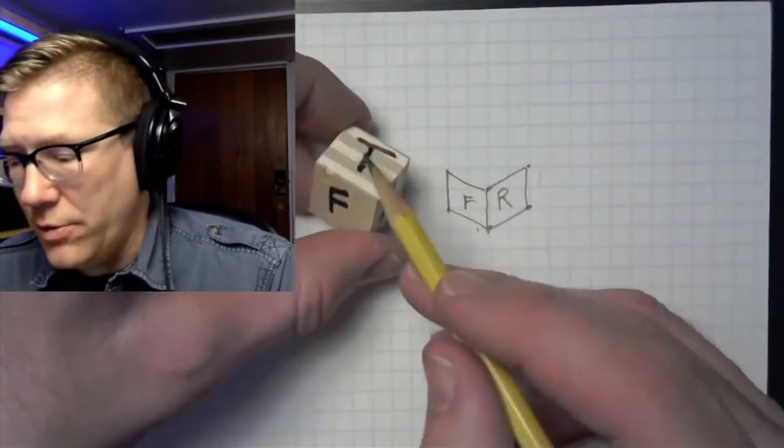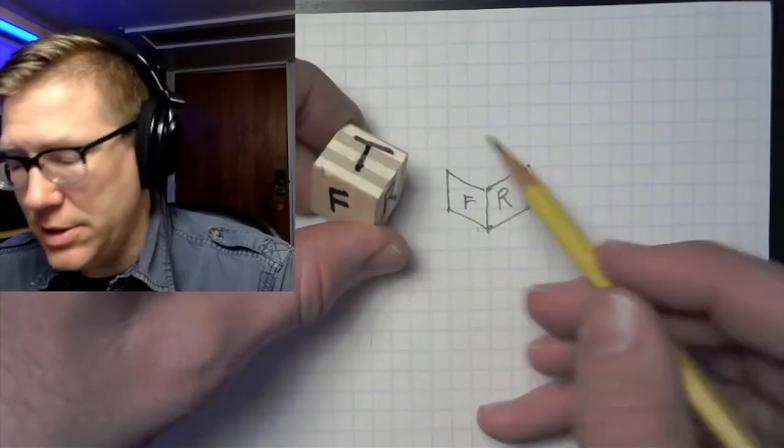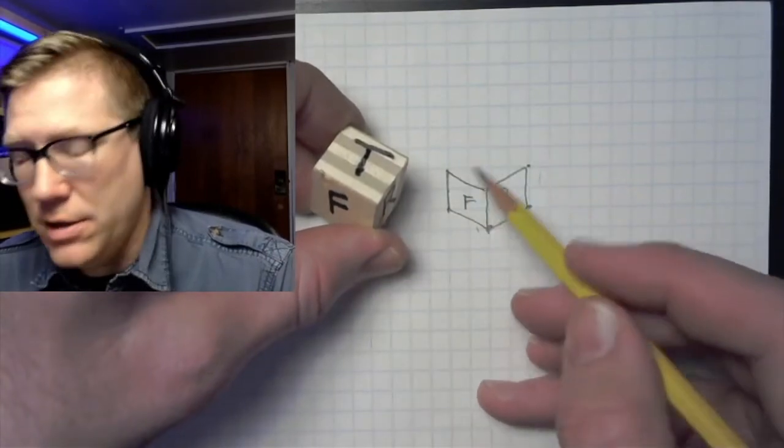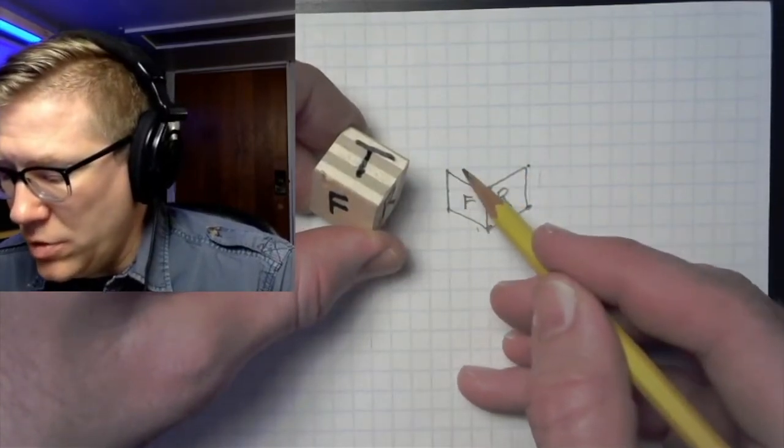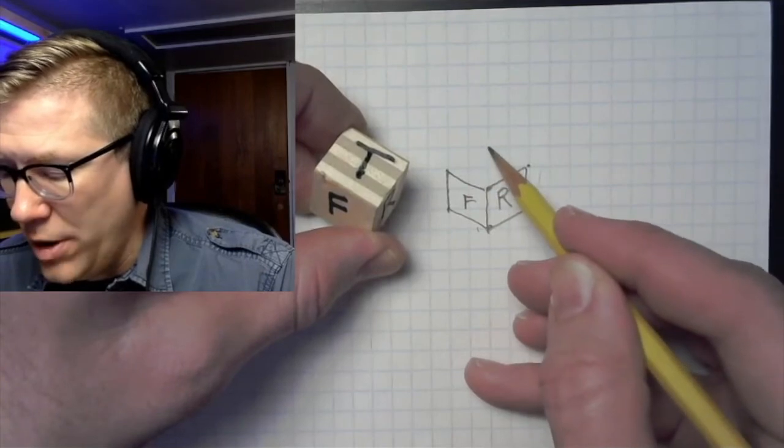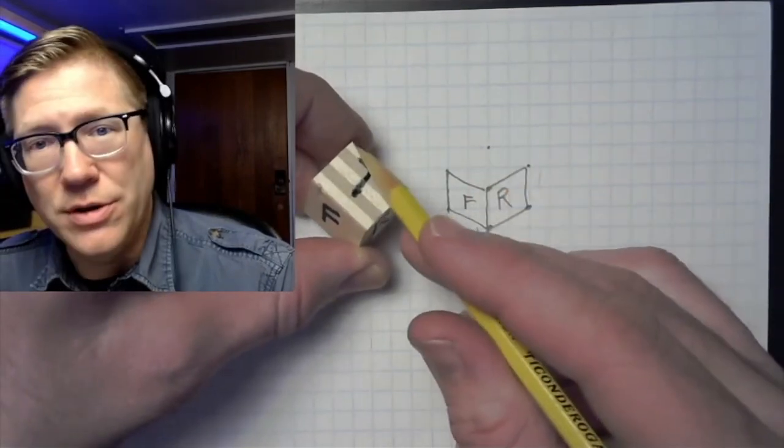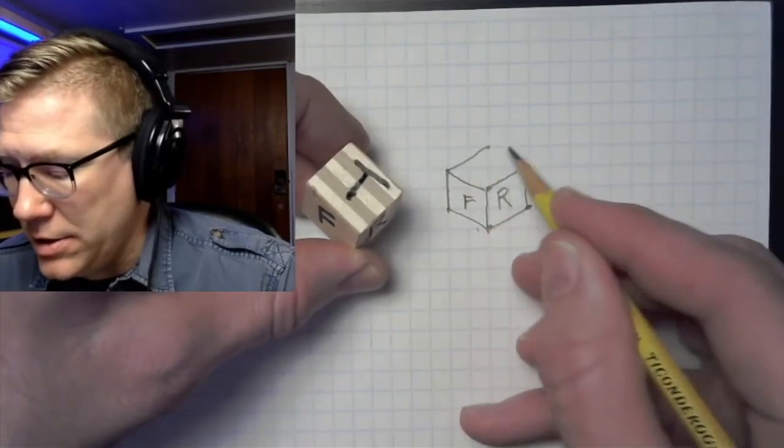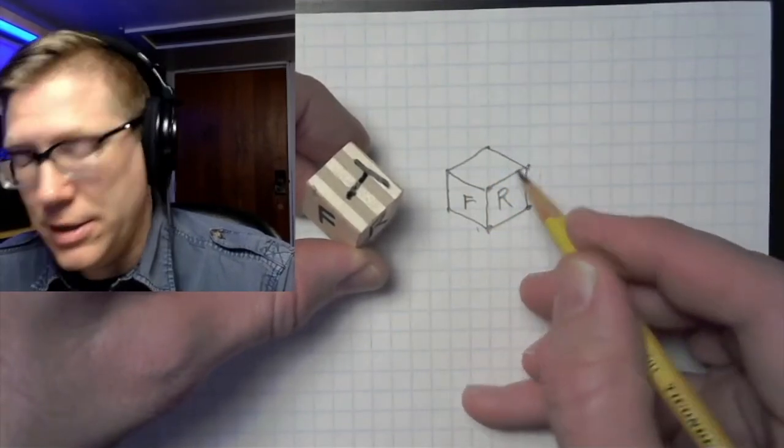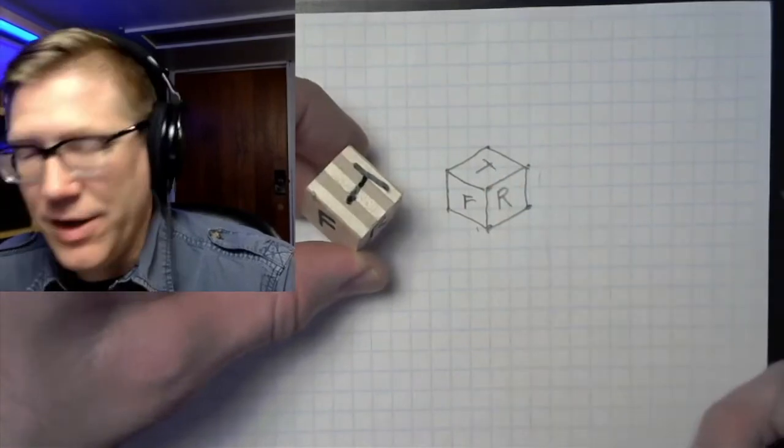Now just like I showed before, I want to be able to draw the top face of my object. I've got these two lines already, so I'm going to go over one, two, and up one on this front face, and that gives me that back corner of the object back there. I'll just connect that line here, and that line here, and that gives me my top face.